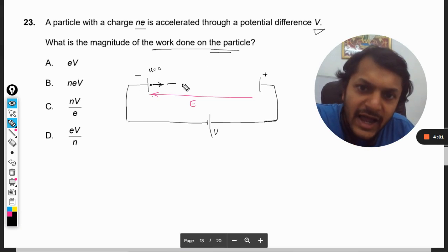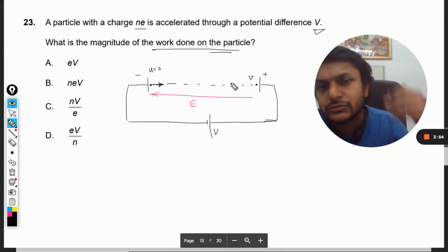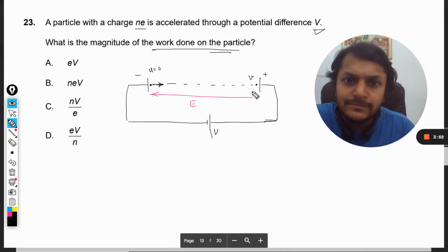Then this electron reaches the final point and the velocity becomes v. Now the gain in kinetic energy is half mv squared, as earlier the kinetic energy was zero.